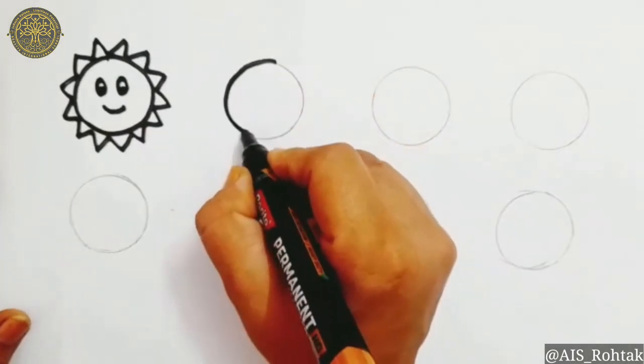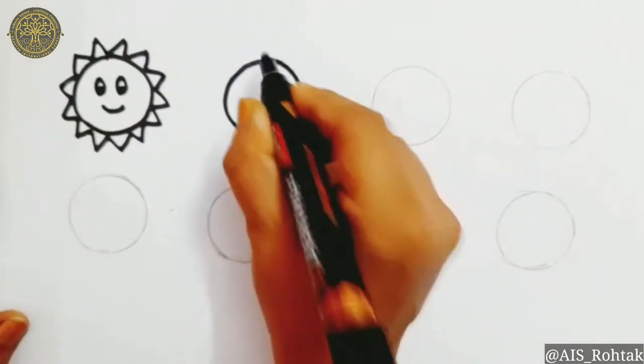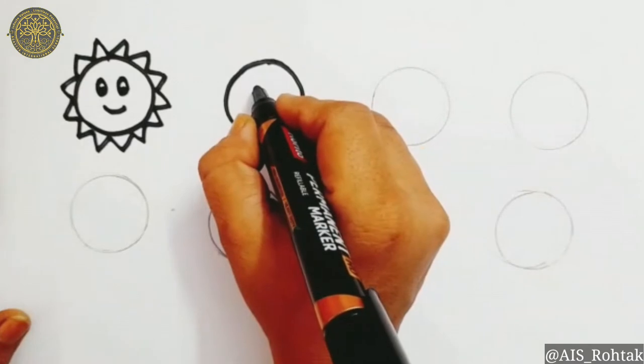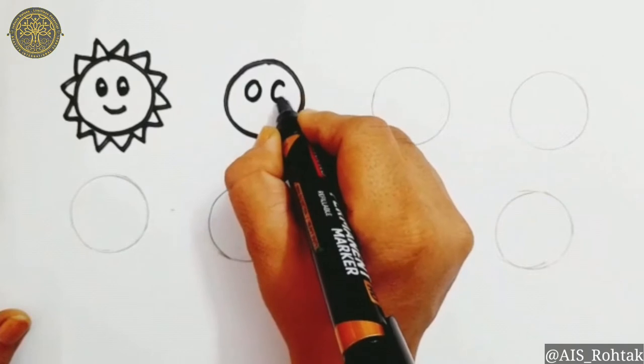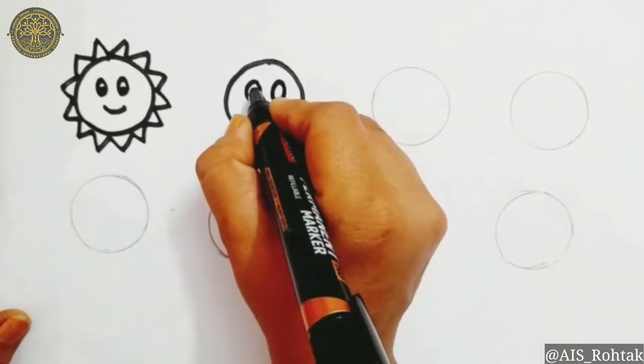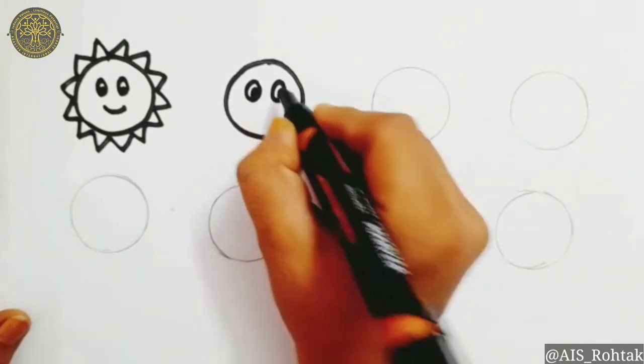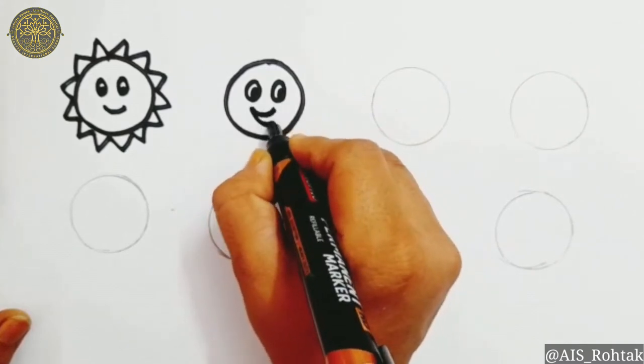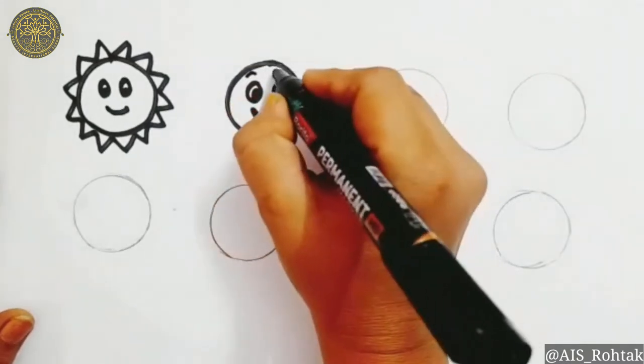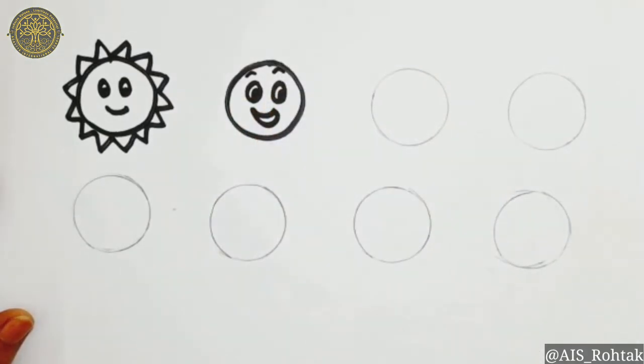Now come to the second circle. We are going to make smiley. Do outline and then draw two circles for the eyes. Then draw half curve in the eye and fill it. Then smile and eyebrows. Our smiley is ready.